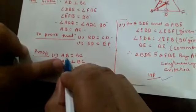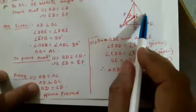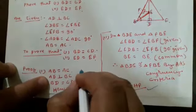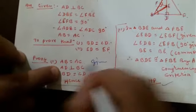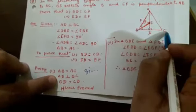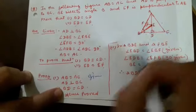Proof of Part 1: AB is equal to AC as already given, and AD is perpendicular to BC. Therefore BD is equal to CD. Hence Part 1 proved.